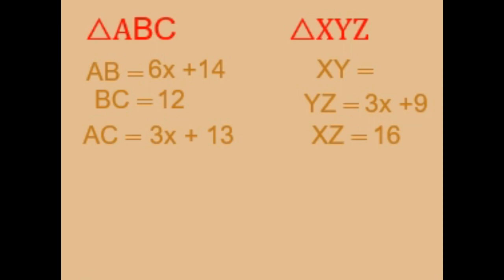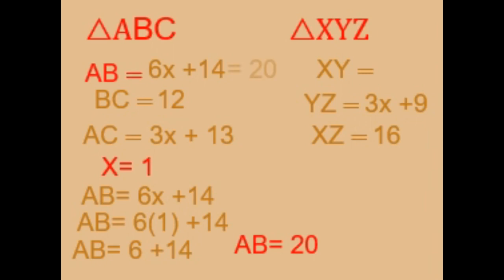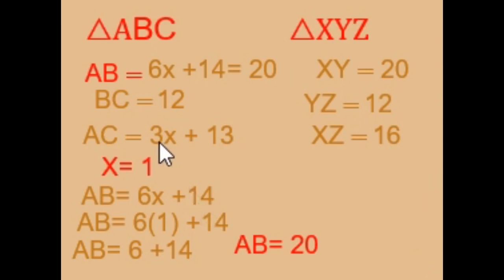Now let's find the measure of each side. For side AB: substitute x equals 1 into 6x plus 14, giving 6 times 1 plus 14, so side AB equals 20, and correspondingly side XY also equals 20. Side BC equals 12, and side YZ equals 3 times 1 plus 9, which is also 12. Side AC equals 3 times 1 plus 13, which equals 16, the same as side XZ.